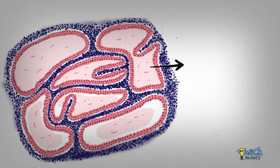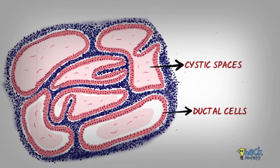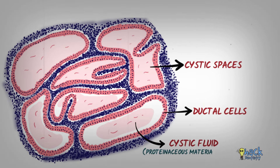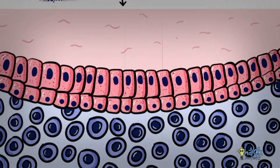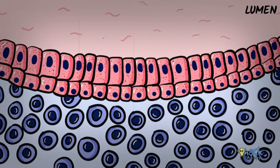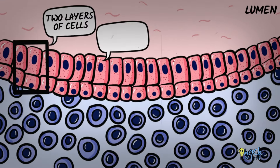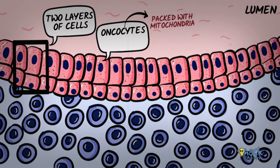Under the microscope, Warthin's tumour consists of numerous cystic spaces lined by ductal epithelial cells. The cystic spaces are filled with secretions consisting of proteinaceous material and cellular debris. The epithelial layer lining these cystic spaces is thrown into numerous papillary folds that extend into the lumen. The epithelial lining consists of two layers of cells, with both layers being oncocytic. Oncocytes are cells that are packed with mitochondria and appear granular and deep pink under the microscope.